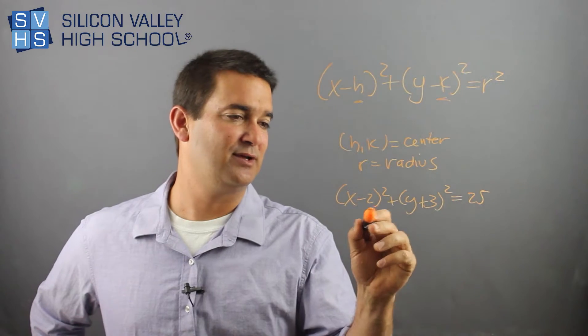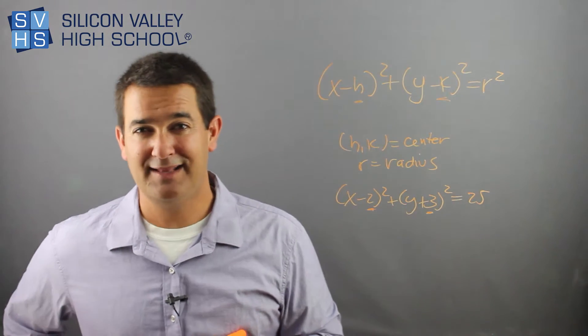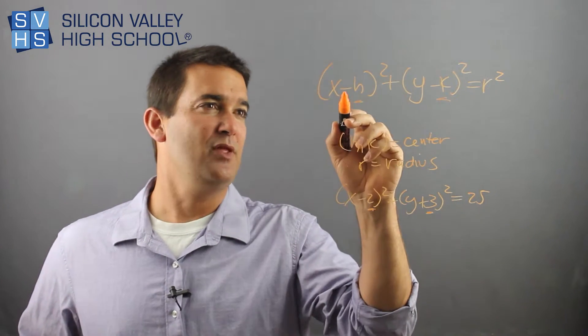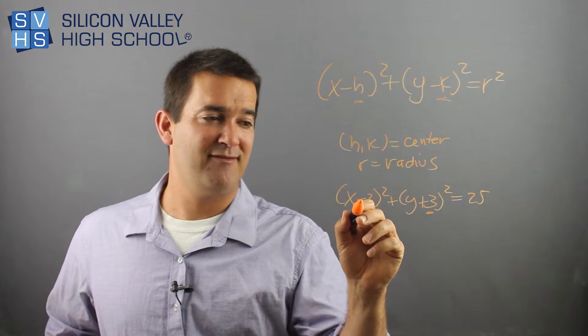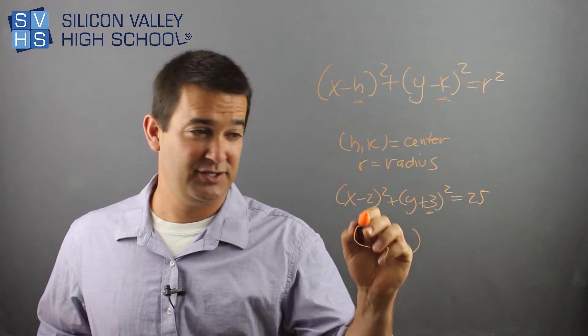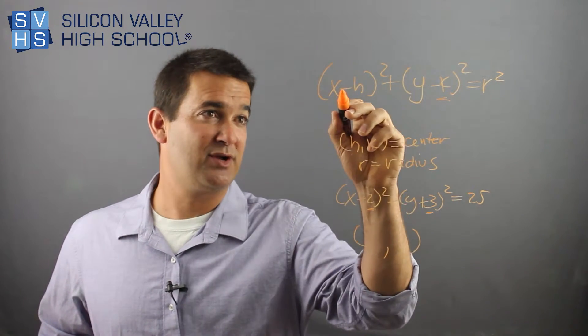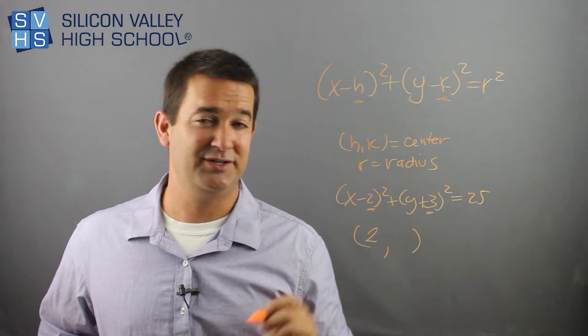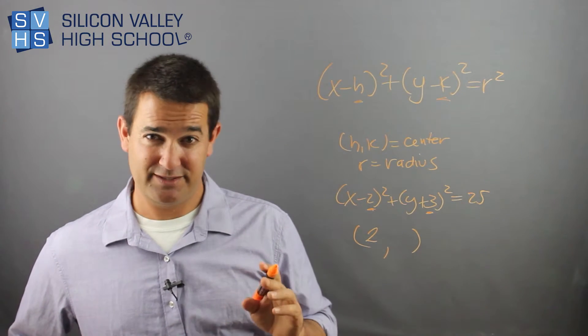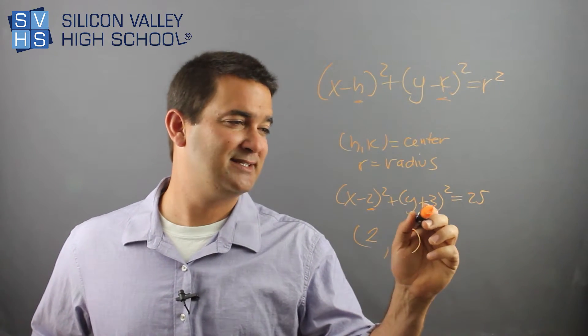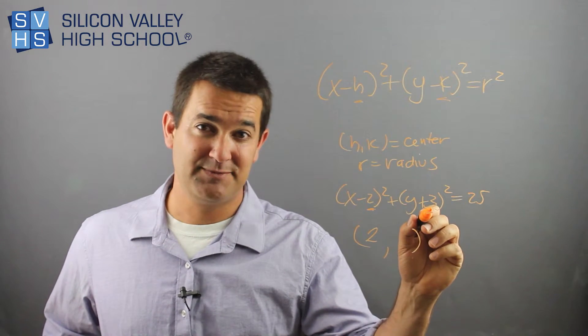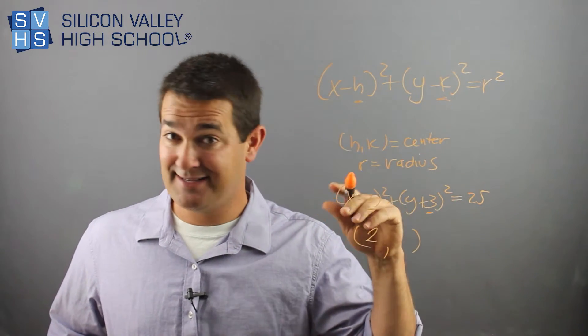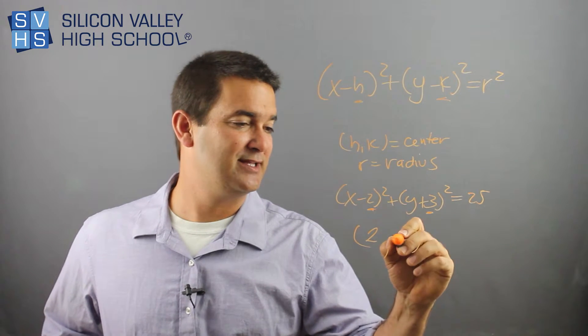h, k is the center. So I just look at h, k. The one thing that everybody messes up, the formula already comes with a minus. So if you have a minus, the center is not negative 2 something. The minus was already there. So this is a positive 2. One way to look at it is just always do the opposite. But look at your y scenario here. It's supposed to be y minus k. So k must be negative 3. y minus a negative 3 would be plus. So this is negative 3.